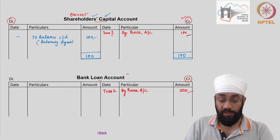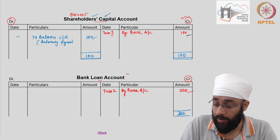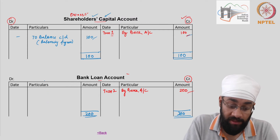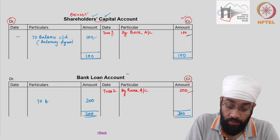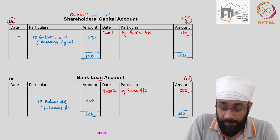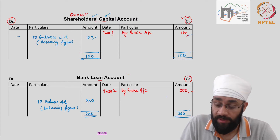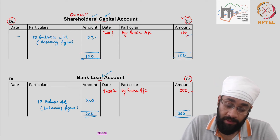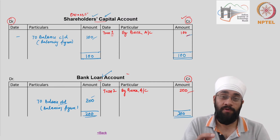Let's go to the bank loan account which has 200 on the credit side. I'm going to sum this up: 200 on both sides, and total the debit side which is nil, so the balance is 200. I write 'to balance carried down' — this is also a balancing figure that did not come from any transaction. This means the business is still carrying a liability of 200 after the 14 transactions.